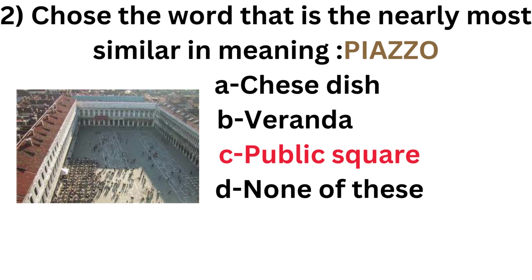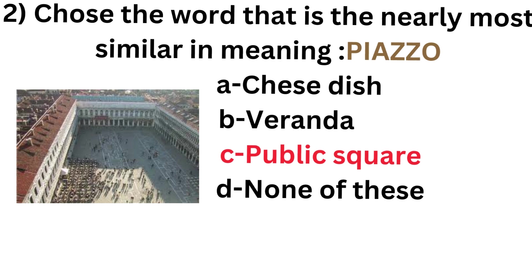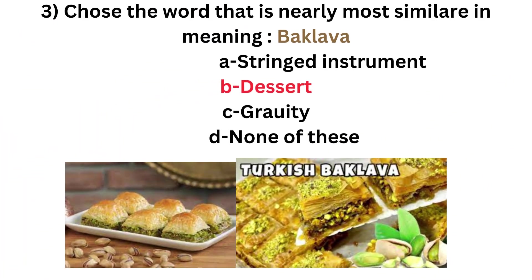Piazza stands for public square or public place, so the answer is option C. Next, the most similar meaning of 'baklava' — it is option B, dessert. Baklava is basically a food or food cuisine.